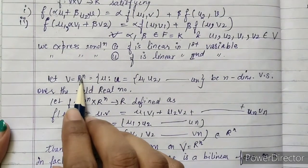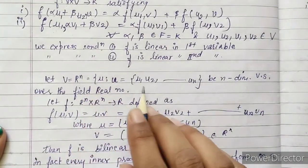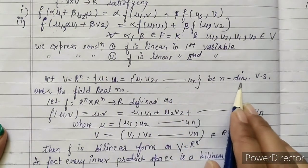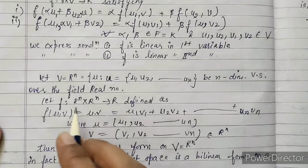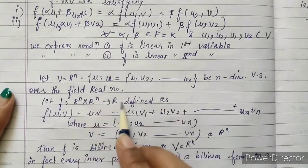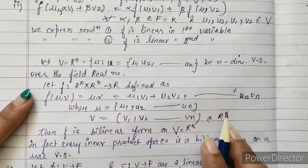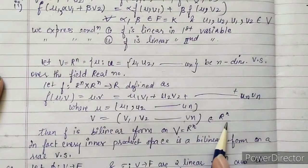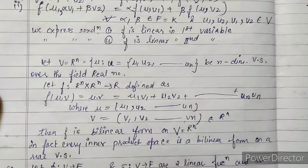For example, let V = ℝⁿ, an n-dimensional vector space over the real number field. The function f: ℝⁿ × ℝⁿ → ℝ is defined as f(u, v) = u · v (dot product), written in linear combination form where u and v belong to ℝⁿ. Then f is a bilinear form on V = ℝⁿ. In fact, every inner product space is a bilinear form on a real vector space.